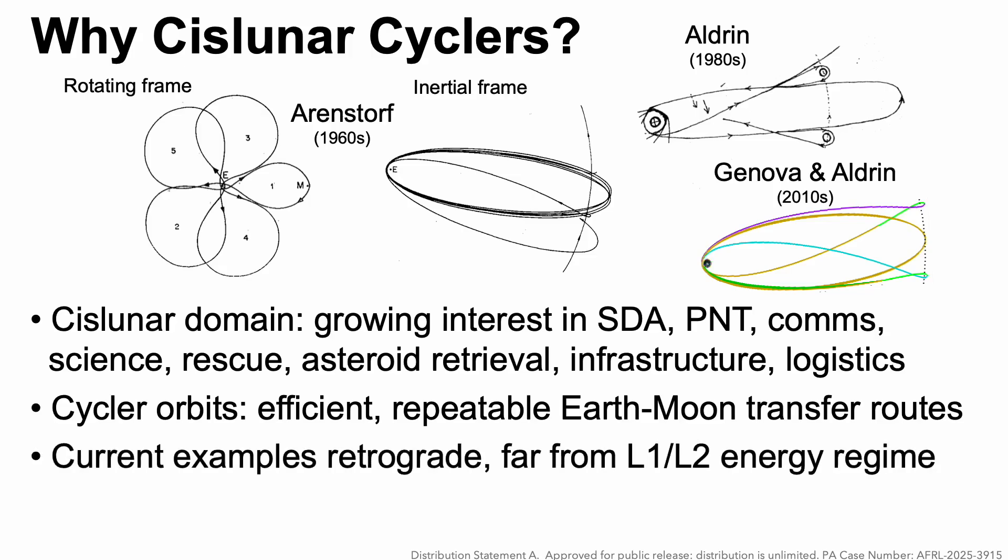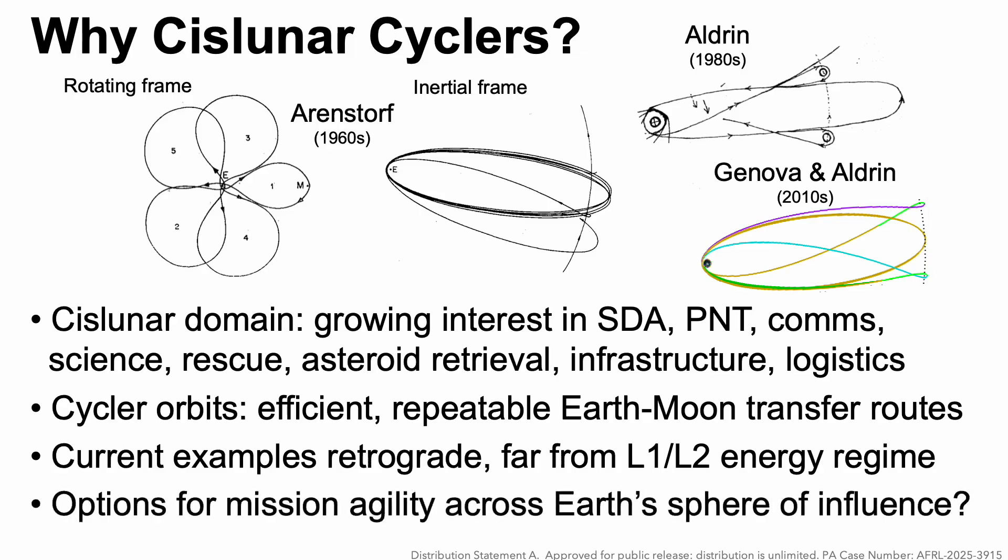These examples involve retrograde encounters with the Moon and they're far from the lunar L1 and L2 energy regime, which is becoming increasingly important. So if we want options for greater mission agility across the Earth's sphere of influence, is this possible?